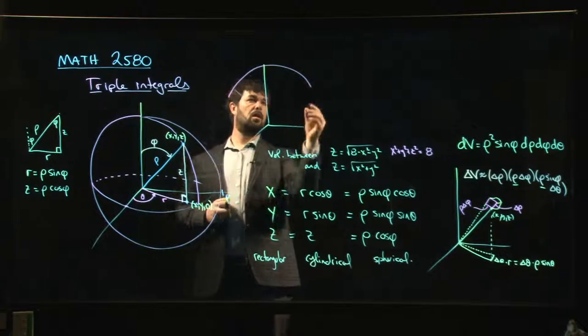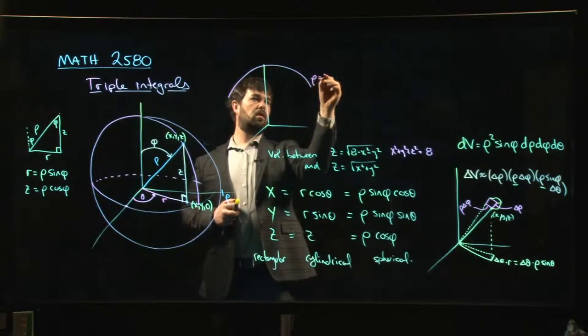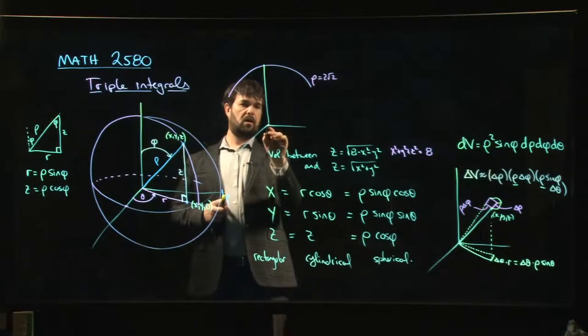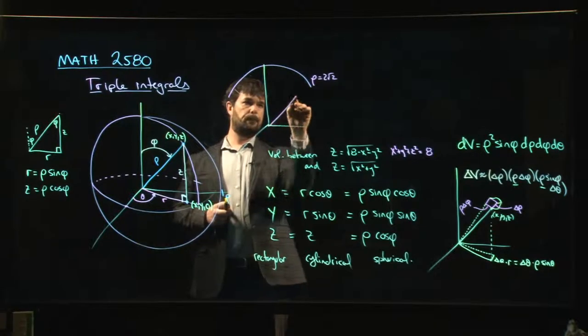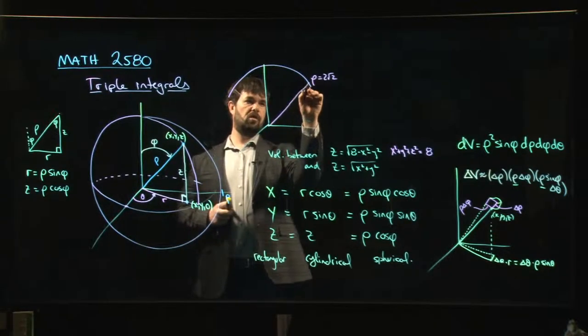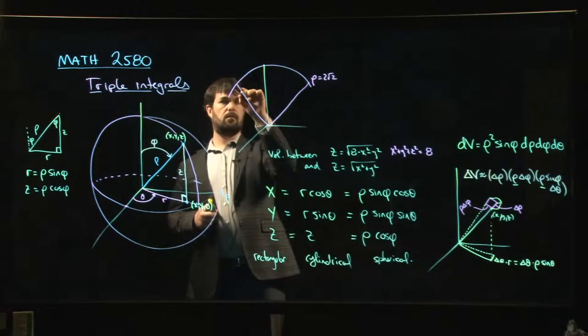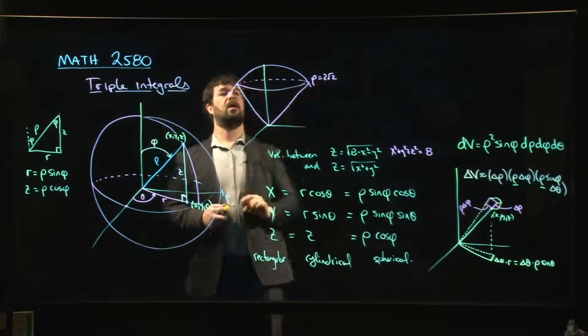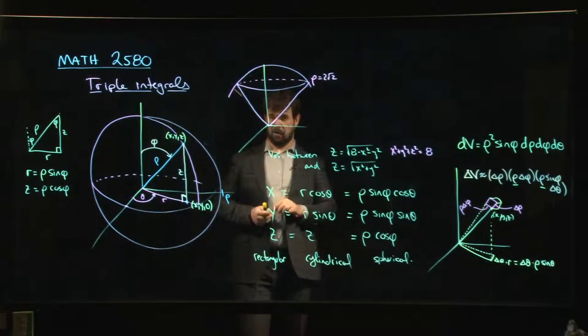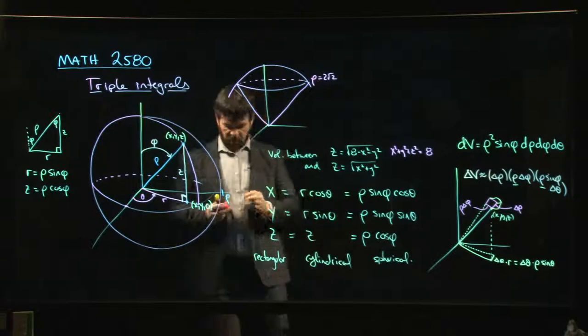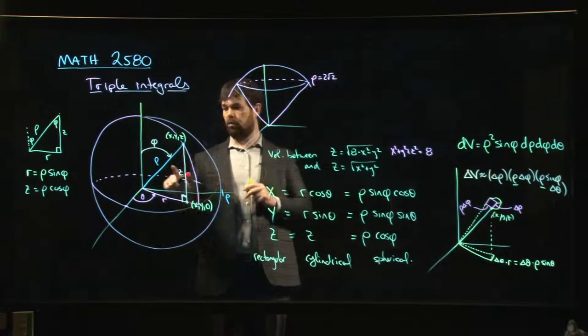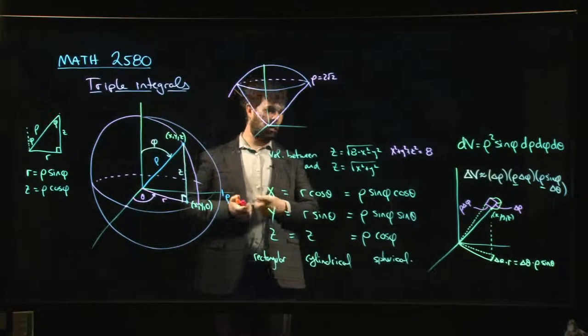There's a sphere of radius 2 root 2. Okay, and there's this cone which comes out to meet it. And they intersect in this circle. Now how do I describe a cone? I mentioned in the last video that cones are what you get when you set phi equal to a constant.